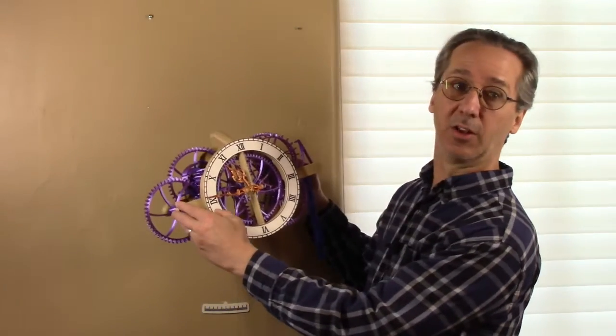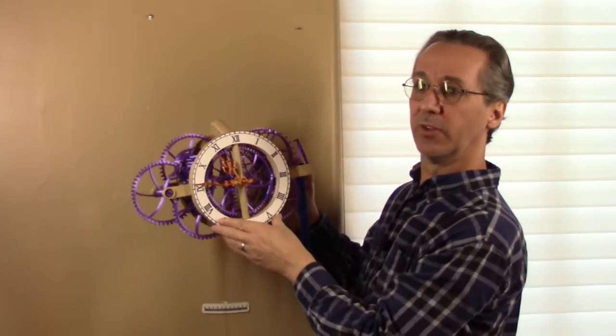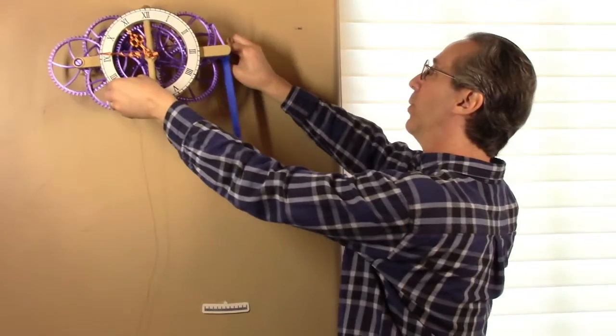The first step is simply to hang the clock on the wall. Screw or nail into a wall stud at somewhere between 68 and 72 inches high is a good starting point.